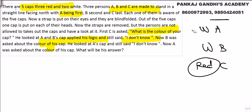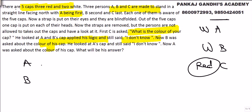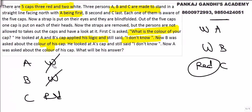But C said 'I do not know.' This means both A and B's caps are not white. We know that if both A and B had white caps, C would have said red. Since C did not say that, we can eliminate the case where both A and B have white caps.